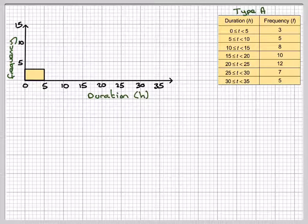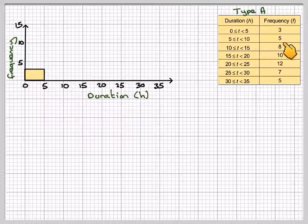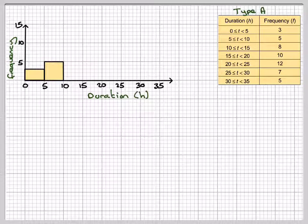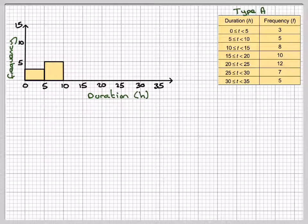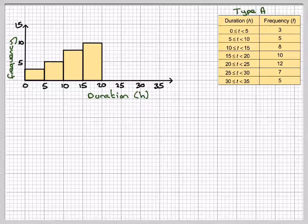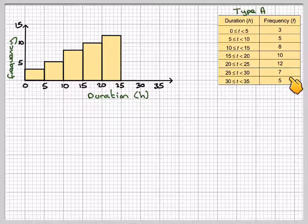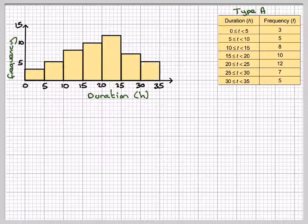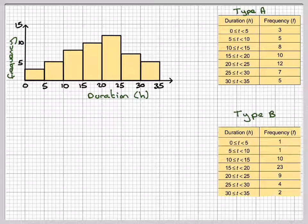This is going to be, first one is 3, next one is 5. You don't actually have to color it in. The next one is 8, and the next one is 10. The one after that is 12, then 7 and 5.